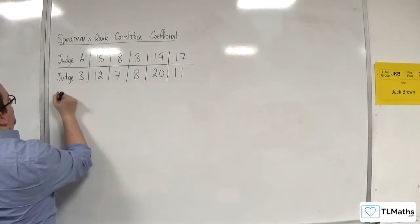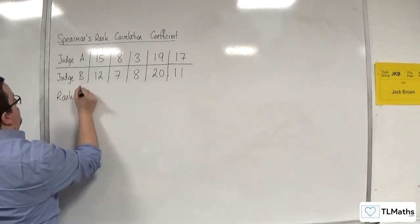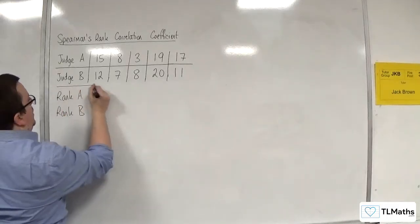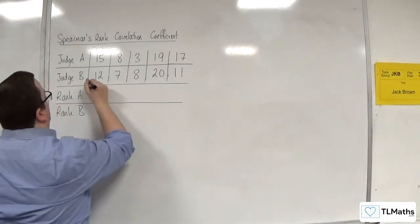Well, the first thing that we're going to need to do is to rank the data, and we get a rank for Judge A's scores, and one for Judge B's scores.